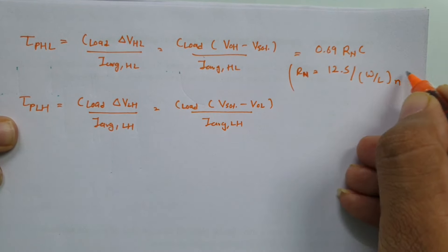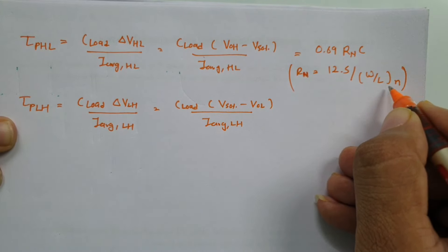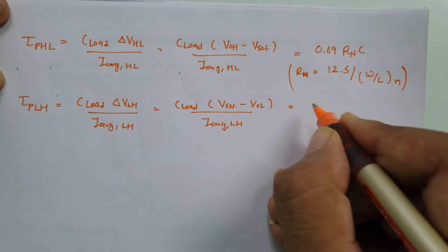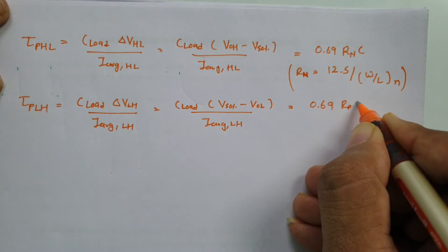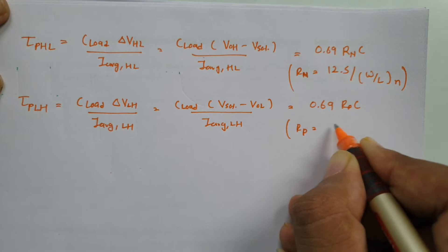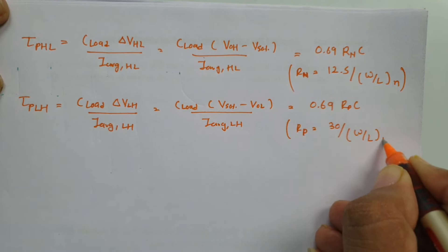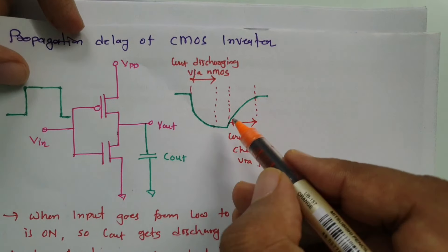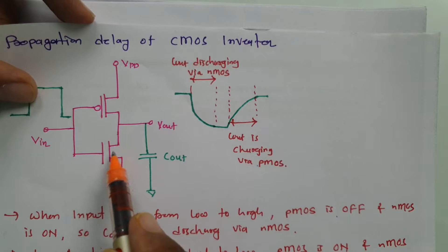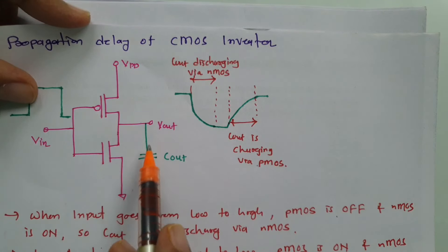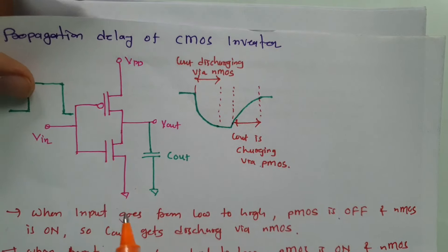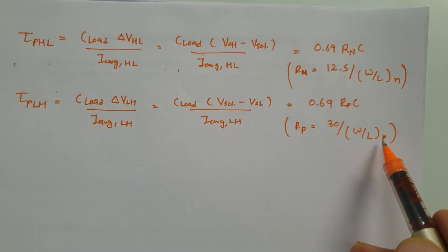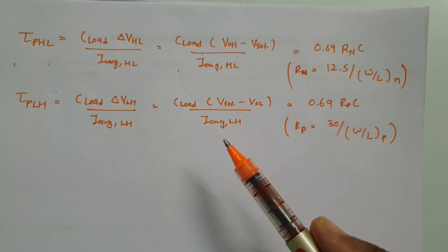RN can be calculated as 12.5 divided by the width-to-length ratio (W/L) of the NMOS transistor. For low-to-high propagation delay, the calculation is 0.69 × RP × C, where RP is the resistance of PMOS when it is on. RP is calculated as 30 divided by the width-to-length ratio (W/L) of the PMOS transistor. This is because during low-to-high output transition, NMOS is off, PMOS is on, and the capacitance charges through PMOS.